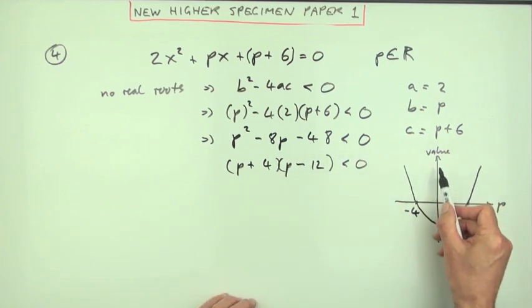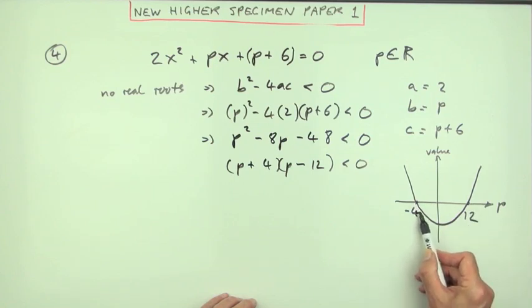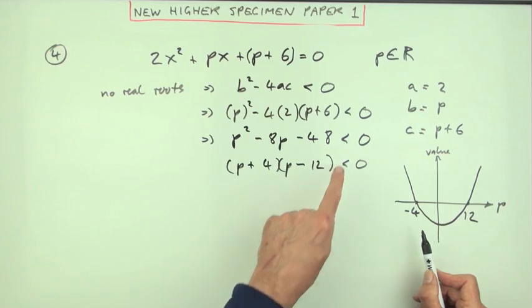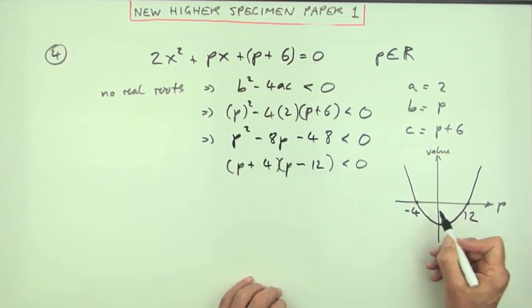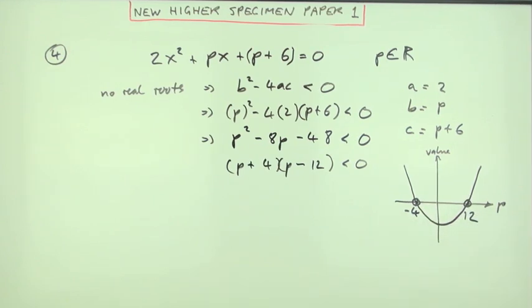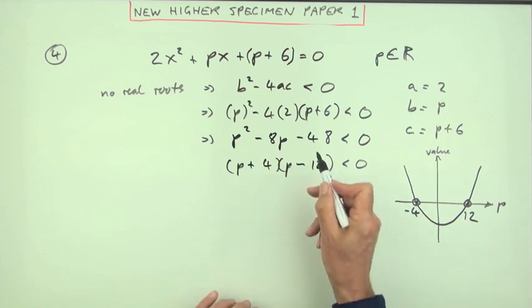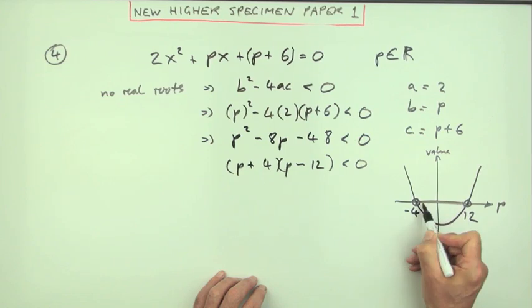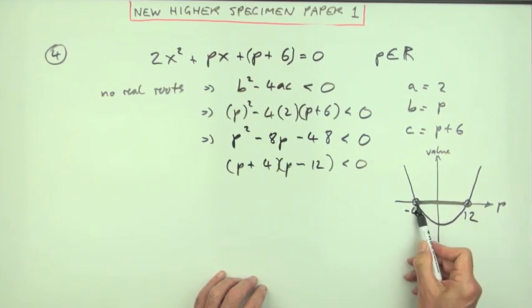That picture shows which values of p make it less than zero. This is the portion less than zero. Notice it doesn't include zero, so we don't really want -4 and 12. The convention is to put a hollow circle to exclude them. The values of p that work are anything between -4 and 12.